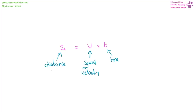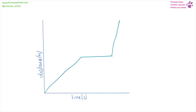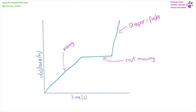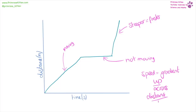Distance equals speed times time. Distance is measured in metres, speed or velocity in metres per second, and time in seconds. Distance-time graphs tell us lots of information. If we have a slope that is increasing, we are moving, and the steeper the slope, the faster we are moving. If it is a flat line, it is not moving — as time increases, distance is not increasing. We can calculate speed as the gradient, which is up over across, or distance over time.